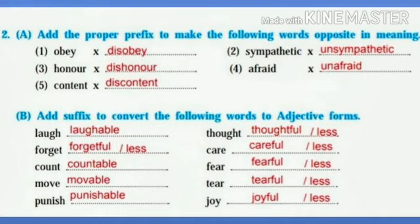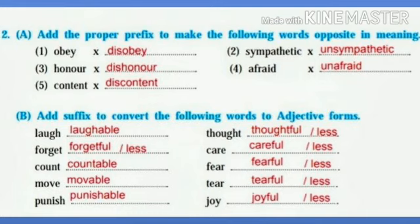Question number 2A: Add the proper prefix to make the following words opposite in meaning. A prefix is added before a word to form its antonym. For example, we can use 'dis' before 'obey' and the word formed will be 'disobey'. D-I-S is the prefix added before 'obey'.